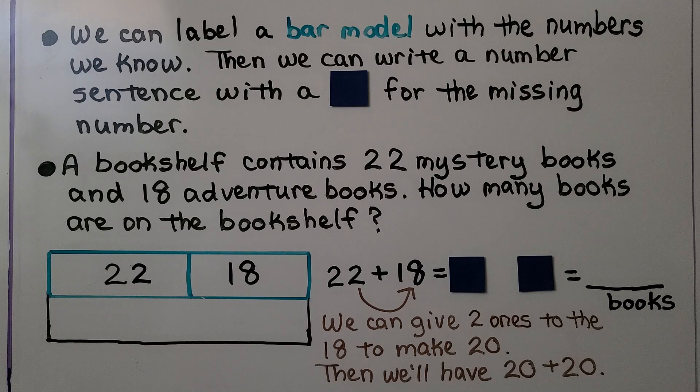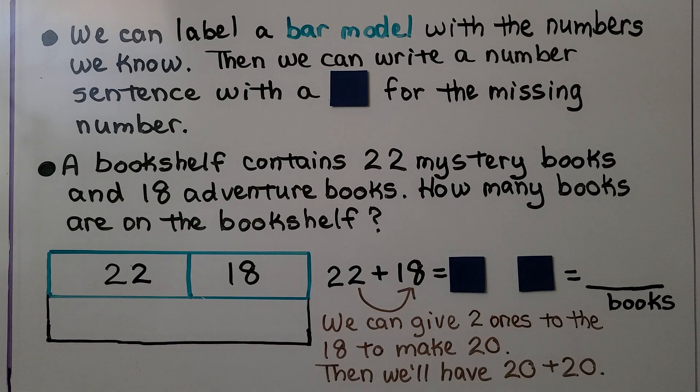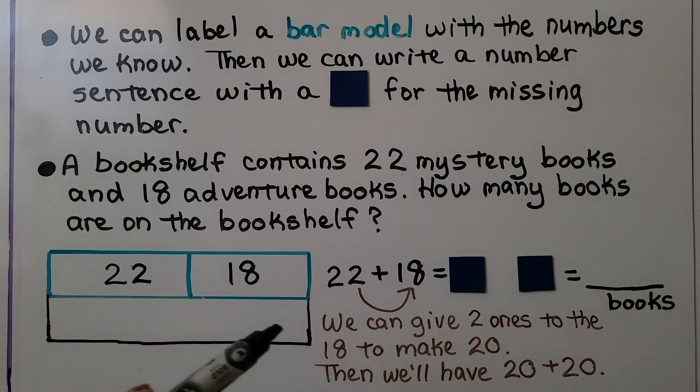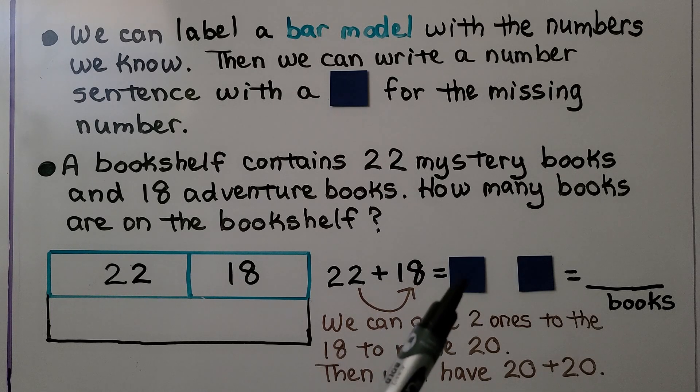We can label a bar model with the numbers we know. Then we can write a number sentence with a square for the missing number. Here's our problem: A bookshelf contains 22 mystery books and 18 adventure books. How many books are on the bookshelf? There's 22 mystery, 18 adventure. We need to know the total. We can write the addition sentence.